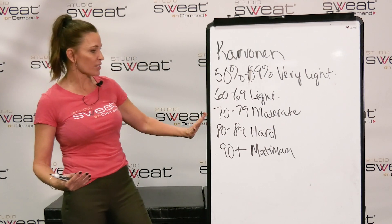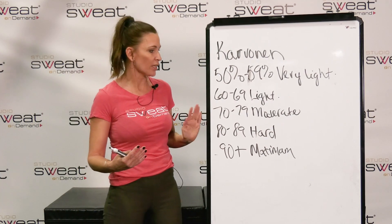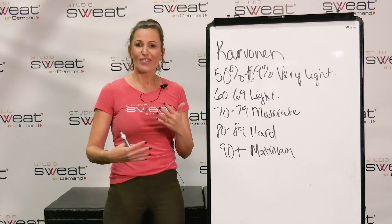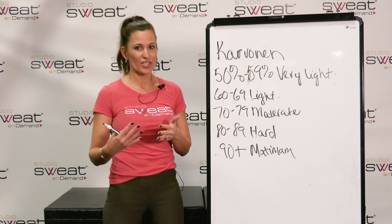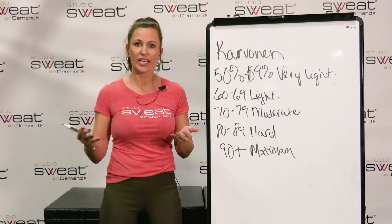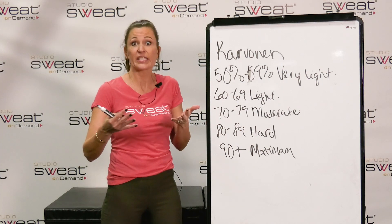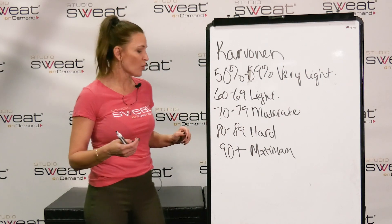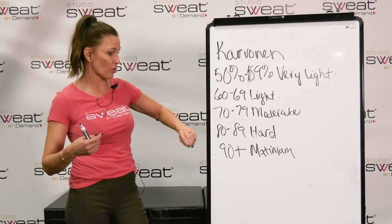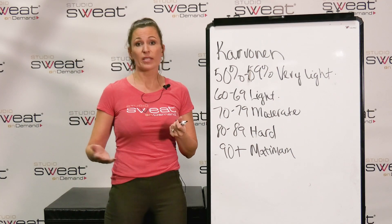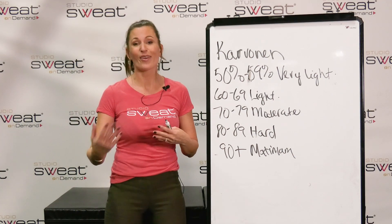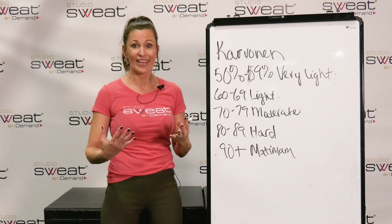When you get into zone three, you're going to start to have a little trouble having a normal conversation. After each sentence, you should have to take a pretty big deep breath in. When you get to zone four — the hard zone — you should only be able to say about three to four words without having to take a deep breath in.